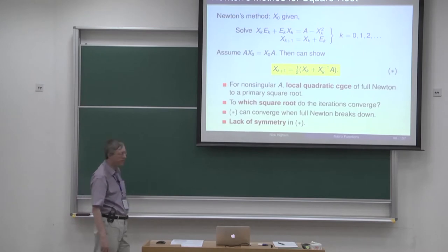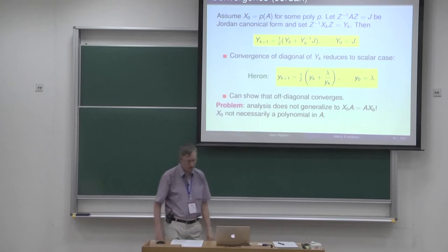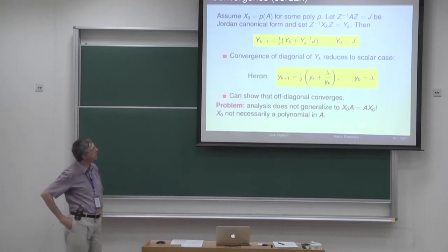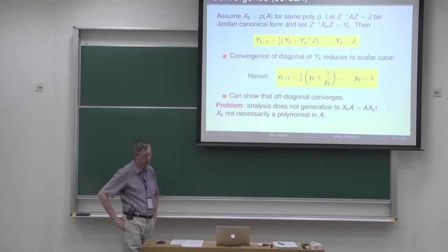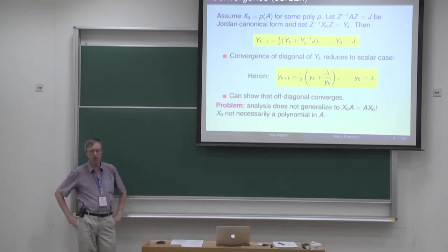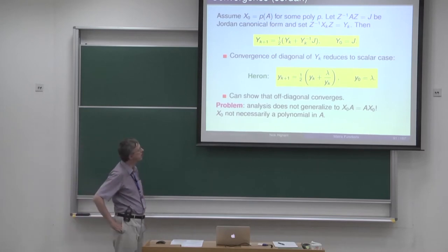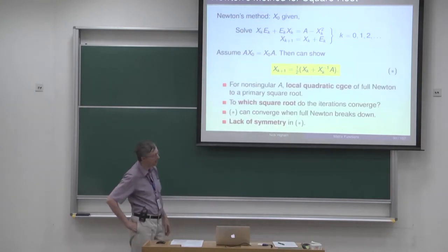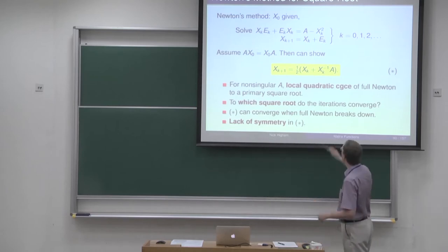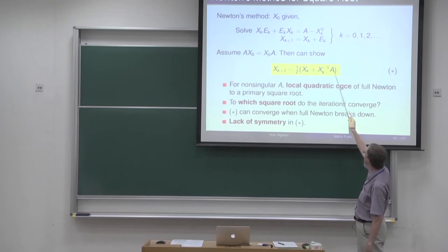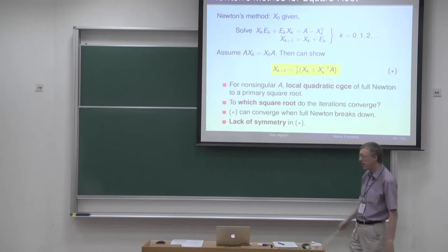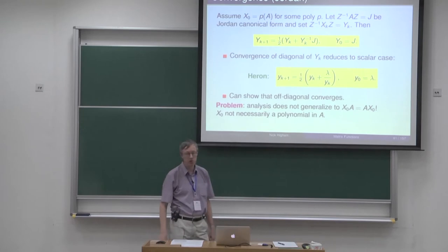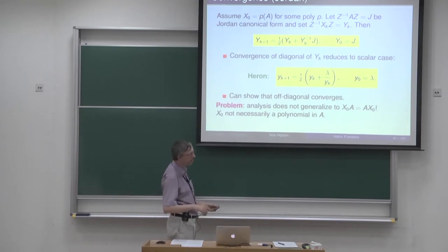What can we say about the convergence of iteration star? One way to analyse convergence is to use the Jordan canonical form. If we assume that x nought is a polynomial in the matrix A, then all the iterates will also be polynomials in A. If x nought is a polynomial in A, then it commutes with A. This whole expression is just some function of A, and functions of A are polynomials in A. So by induction every one of the x_k's is a polynomial in A, and they will all have the same Jordan form — the same Z matrix in the Jordan form.